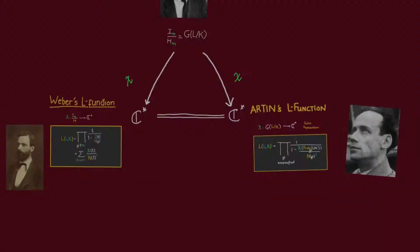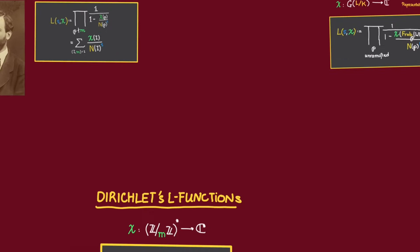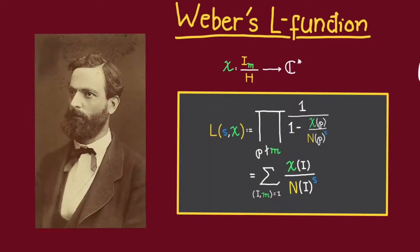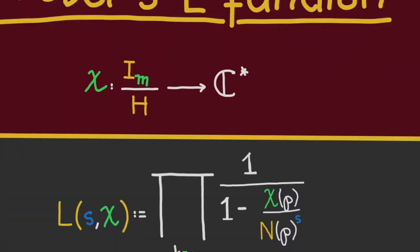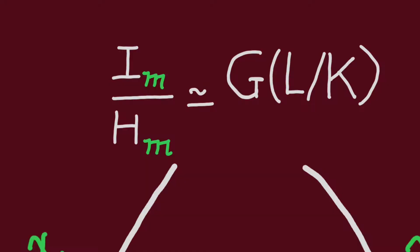Now, the inspiration could be traced back to L functions. As we have previously mentioned, in generalizing Dirichlet's theorem for primes in arithmetic progression, Weber has generalized Dirichlet's L function and defined the notion of Weber L function. As Dirichlet's L functions are for characters chi on Z mod M Z star, Weber's L functions are defined for characters chi on some generalized ideal class group.